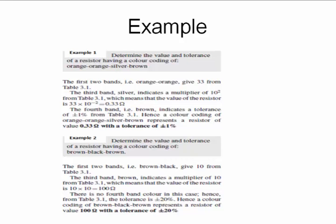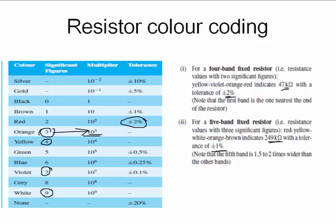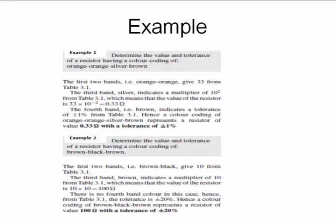Orange, orange, silver, brown. Orange is 3, orange is 3. Silver is 10 to the power minus 2. So 33 into 10 to the power minus 2. And brown is plus or minus 1 percent. So this is 0.33 - 10 to the power minus 2 means divide by 100. So 0.33 ohms plus or minus 1 percent.